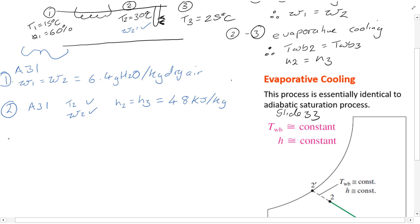Simply, we now have point 3. Again, we're going to use chart A31 because now we have H3 and we also have T3. Therefore, we can use the chart and find the relative humidity at point 3, which works out to be roughly 43.5%.